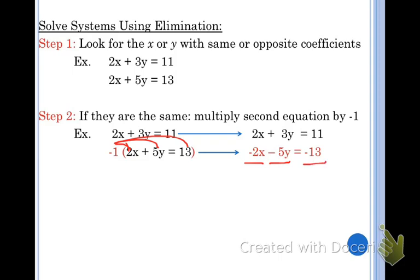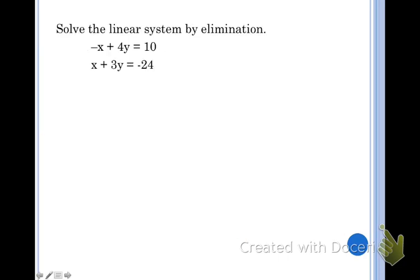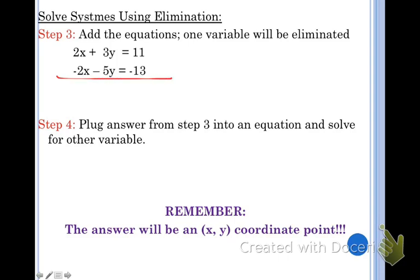Now the reason I did this is I am trying to create an opposite coefficient. Because the third step is that I'm going to add these two equations. And when I add them together, you can see that 2x and negative 2x cancel each other out and give me 0. So I'm not going to write down 0. 3y plus negative 5y is negative 2y. And 11 minus 13 is negative 2. Now as you can see, my x's have been eliminated.